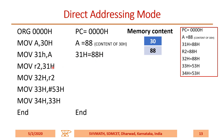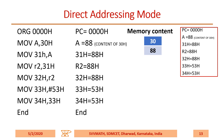When I say MOV R2, 31H — 31H is having 88H, so R2 will become 88H. MOV 32H, R2 — R2 content will move to location 32H. MOV 33H, #53H — 33H will become 53H. MOV 34H, 33H — the content of 33H will be moved to 34H; 33H is 53H, hence 34H will become 53H. Even if you have not understood all these things, don't worry — the next few slides are kept for these things only.